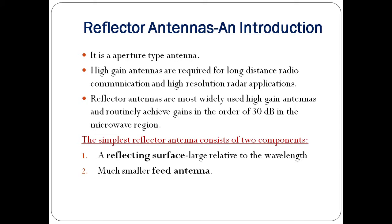If I take a conventional single element microstrip patch antenna, it can barely achieve a maximum gain of 7 to 8 dB. But a reflector antenna is capable of producing a gain of approximately 30 dB in the microwave region — a huge amount of gain. There are different types of aperture antennas: reflector antennas, parabolic dish, and a number of others. Today, we are interested in reflector antennas.